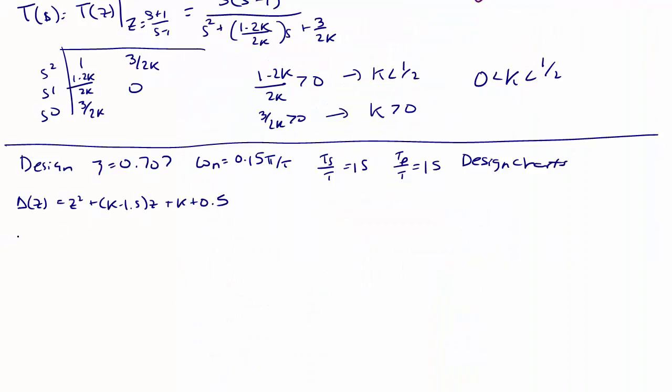Going back to our problem, delta d of z is going to equal z minus 0.7 plus j 0.2 times z minus 0.7 minus j 0.2, which equals z squared minus 1.4 z plus 0.56. And when we equate coefficients, we get that the gain k must be equal to 0.06 to satisfy these design constraints.